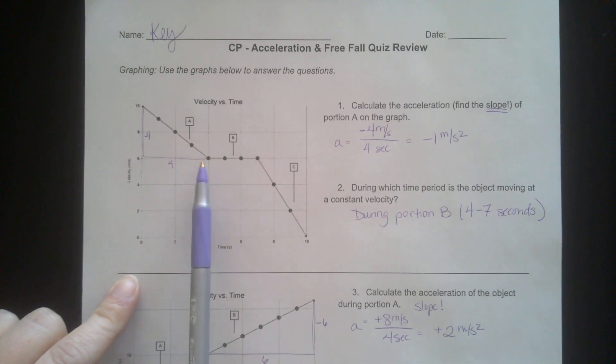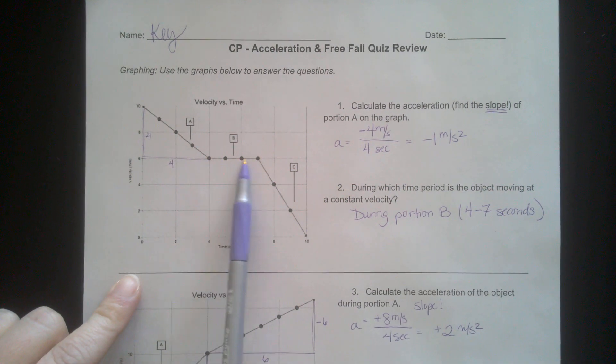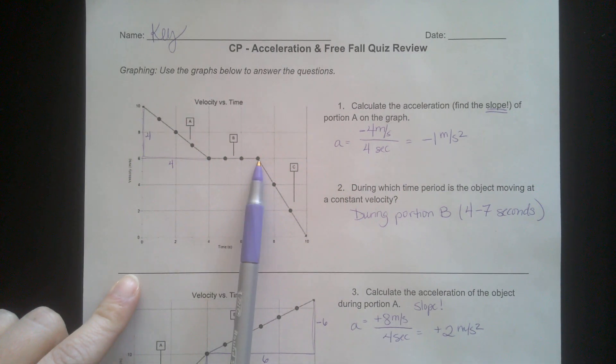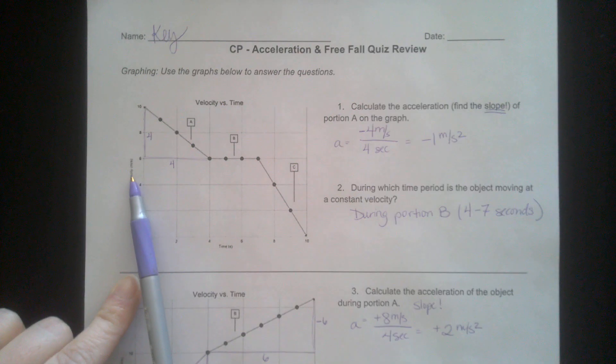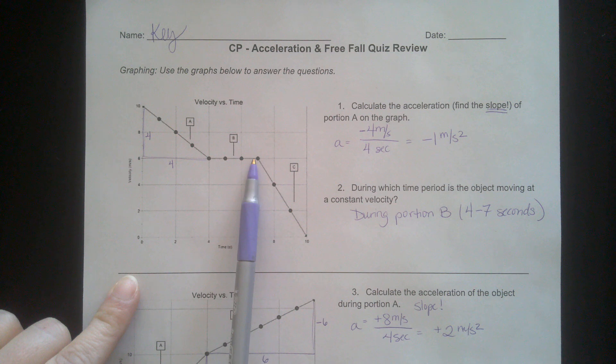During portion B, 4 to 7 seconds here, there's no slope. There's no change in Y, no change in velocity, meaning the object's moving at a constant velocity. That means no acceleration during portion B.